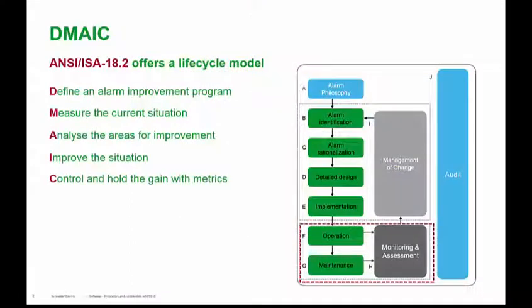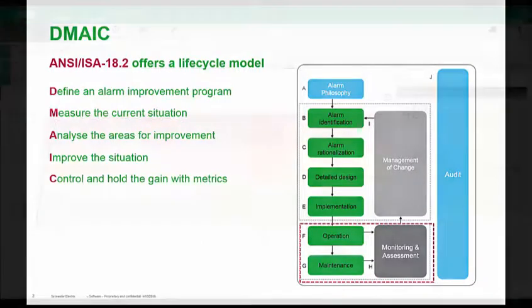One of the things we talked about at the beginning of this video was the ISA 18.2 guidelines — one of the things they discuss is the ability to measure the current situation, analyze the areas for improvement, and improve the situation. One of the ways we do that is with a tool called Alarm Advisor, which allows you to go back in time and look at the alarms to understand where they are coming from. Let's take a look at the Alarm Advisor.